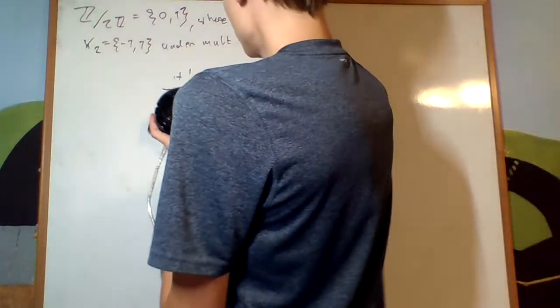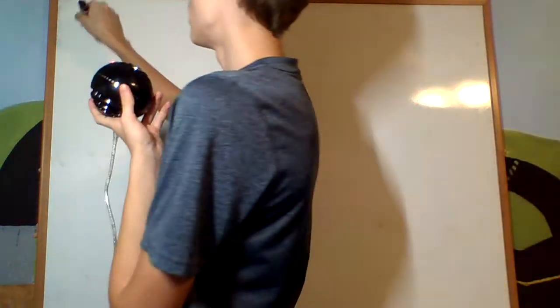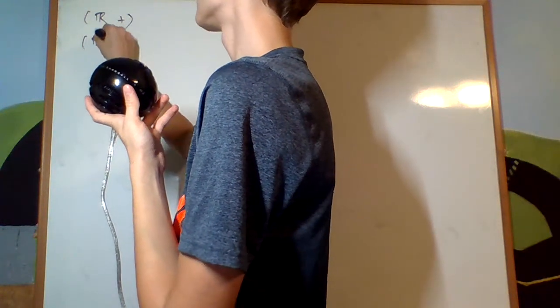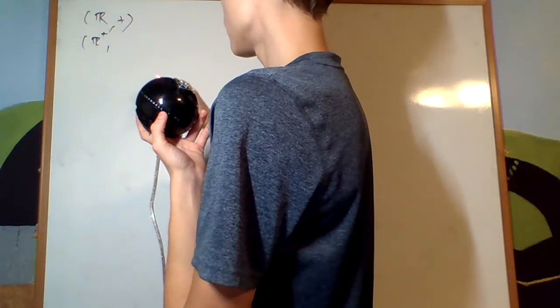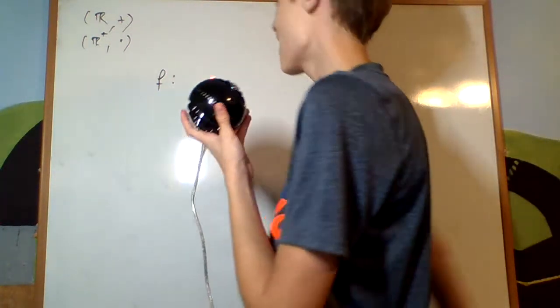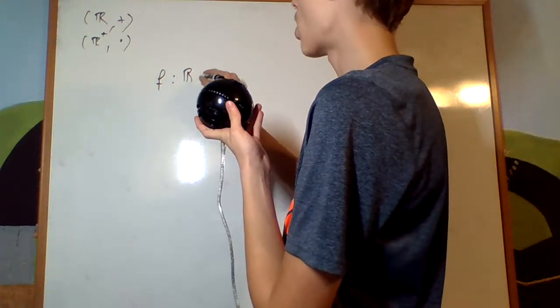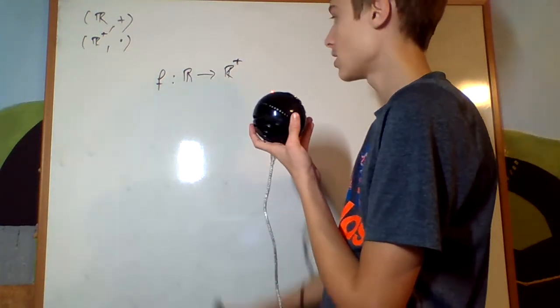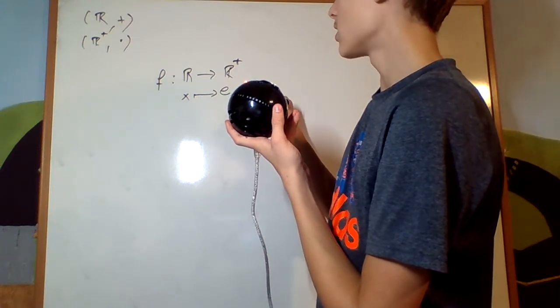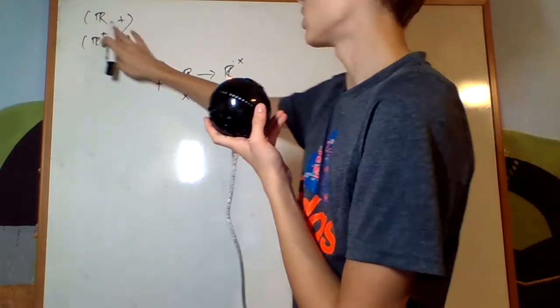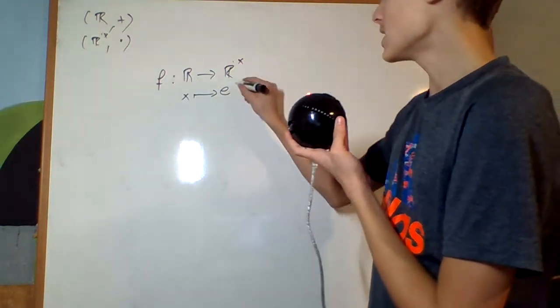Okay, one more example. This one's a little more complicated. R under addition, the real numbers under addition, and R cross, all the real numbers above 0, all positive real numbers under multiplication. These two things are isomorphic. I can prove it by the map f from R into R cross, bringing x to e to the x.